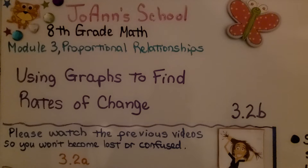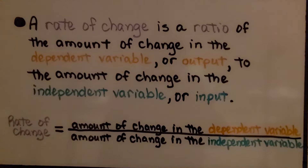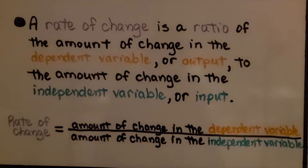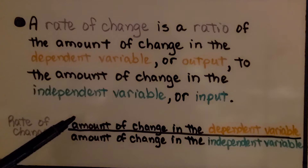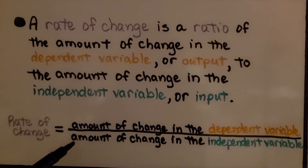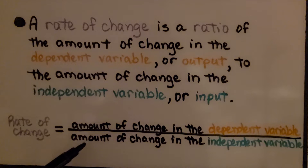Using Graphs to Find Rates of Change, Lesson 3.2b. A rate of change is the ratio of the amount of change in the dependent variable, or output, to the amount of change in the independent variable, or input. We have our rate of change as a ratio — output to input.